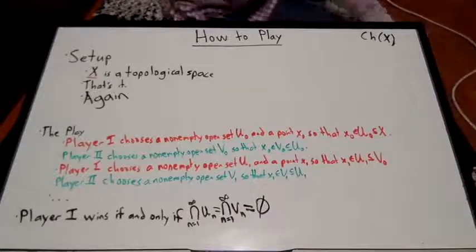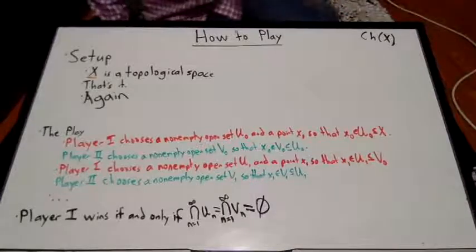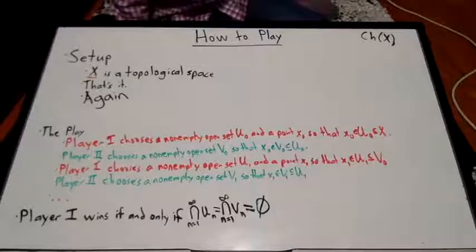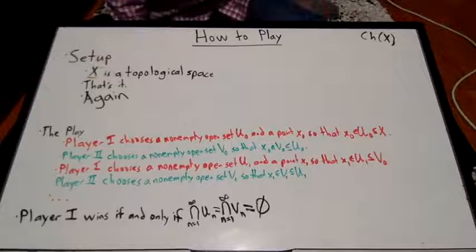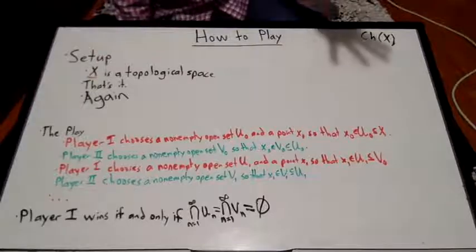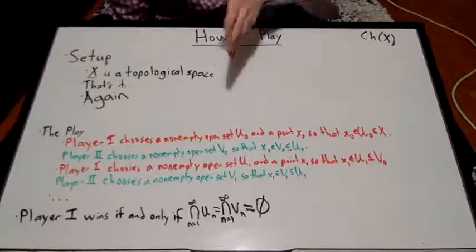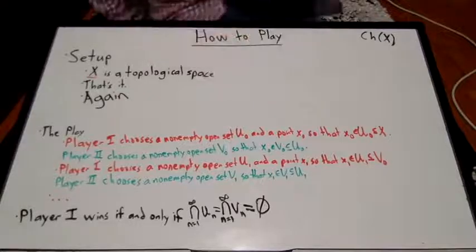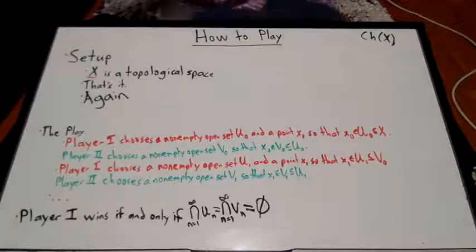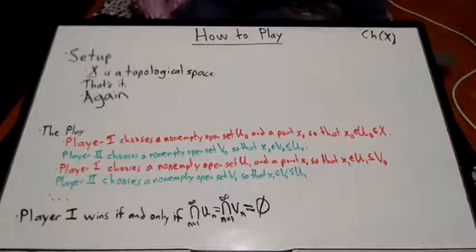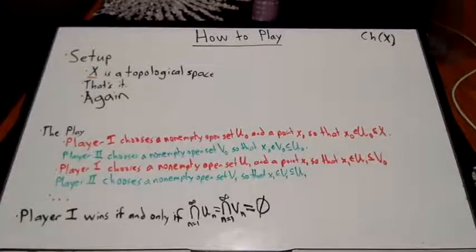So in this game, it's very similar to the previous game, the sort of modified Banach Mazur game. Setup simple. All we need is any old topological space X. So given our X, here's how the play goes.